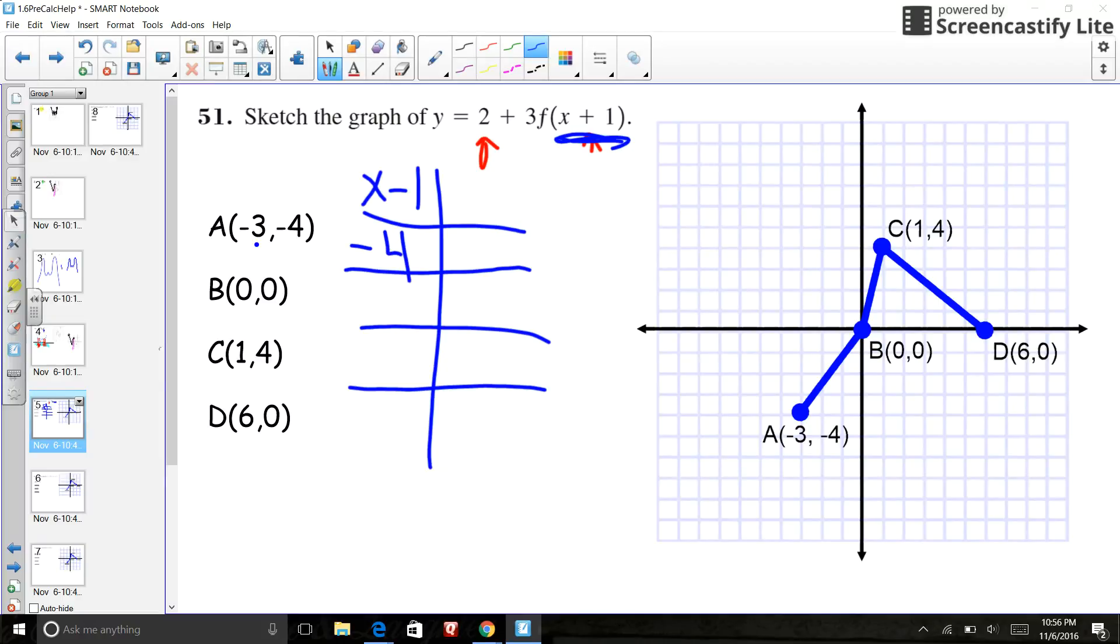So this should go to negative 4. This will go to negative 1. This will go to 0 and 5. That's a positive 5. So I just kind of found what's going to happen to my x value.